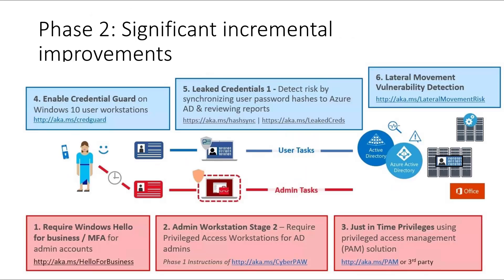Phase two is where you start making incremental improvements to your operational cadence for administrators. On that privileged admin workstation — the PAW, or secure admin workstation (SAW) — make sure you're deploying Windows Hello for Business using facial recognition, biometrics, or a PIN. Deploy MFA for those admin accounts as well. Don't use a text message; use a push notification app, a phone call, or some other method of MFA.